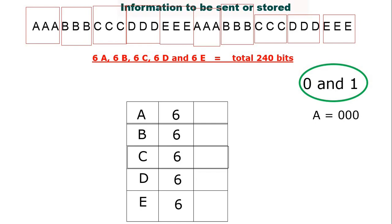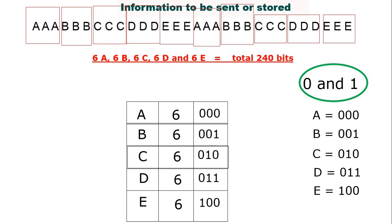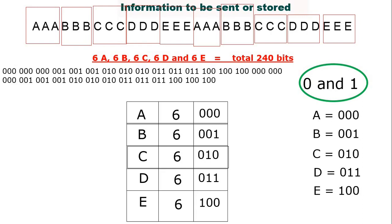We will represent A with three-bit binary 000, and the rest of the characters similarly: 001 for B, 010 for C, 011 for D, and 100 for E. We'll map these codewords, and our message represented through these codewords will contain 90 bits. So from 240 bits, we're getting 90 bits in the compressed message.